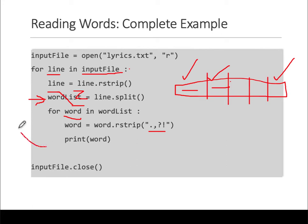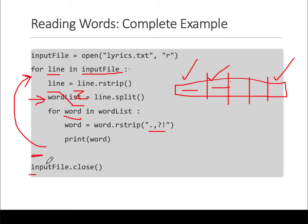Once word_list is done, control goes back up to the for loop. Input file has the second line 'whose fleece was white as snow' — it will do all that processing with that second line as well. Once that is done, there is no other line, control comes down, and we close the pipeline that we opened. That's it.